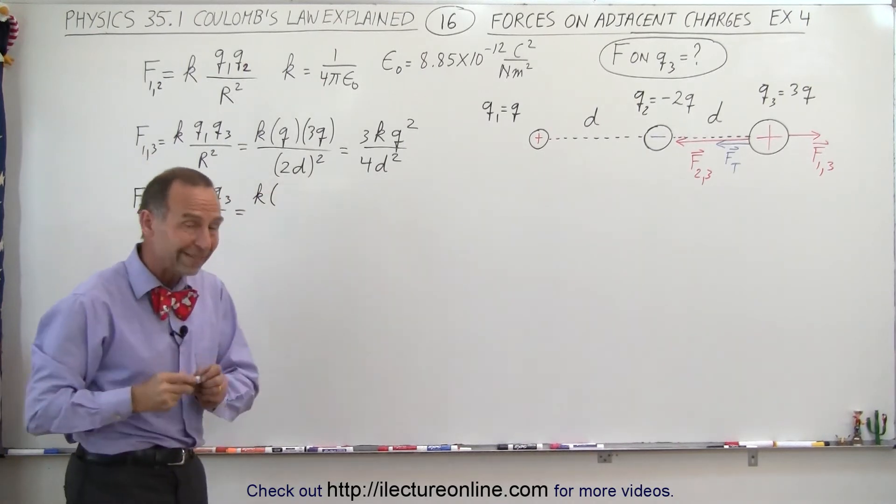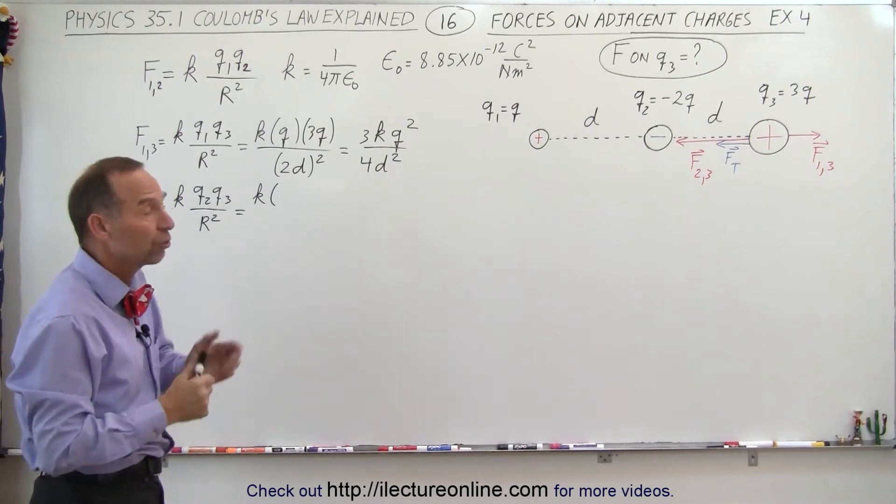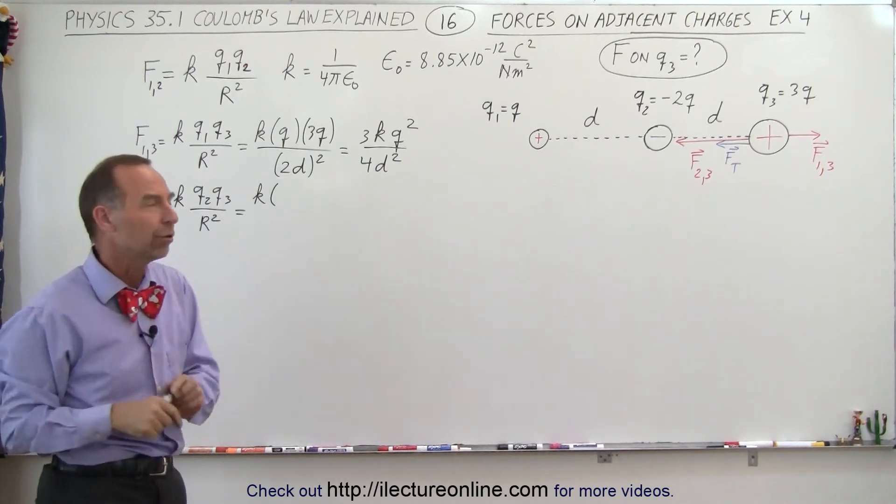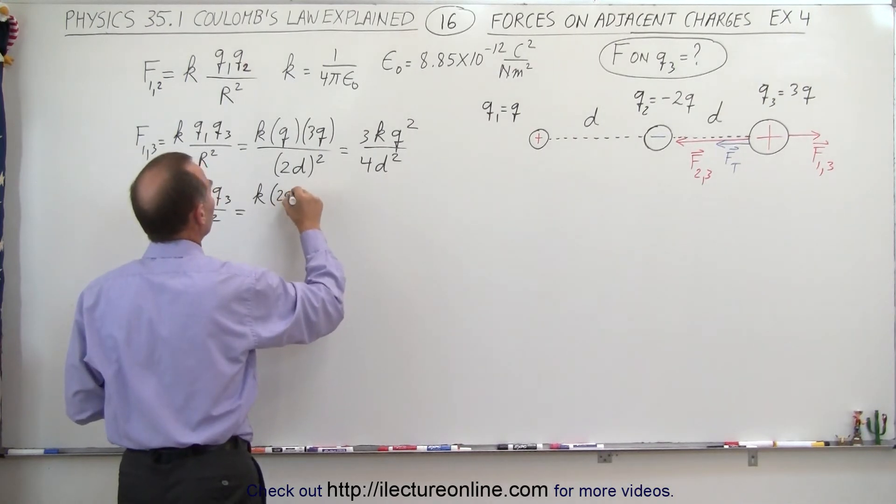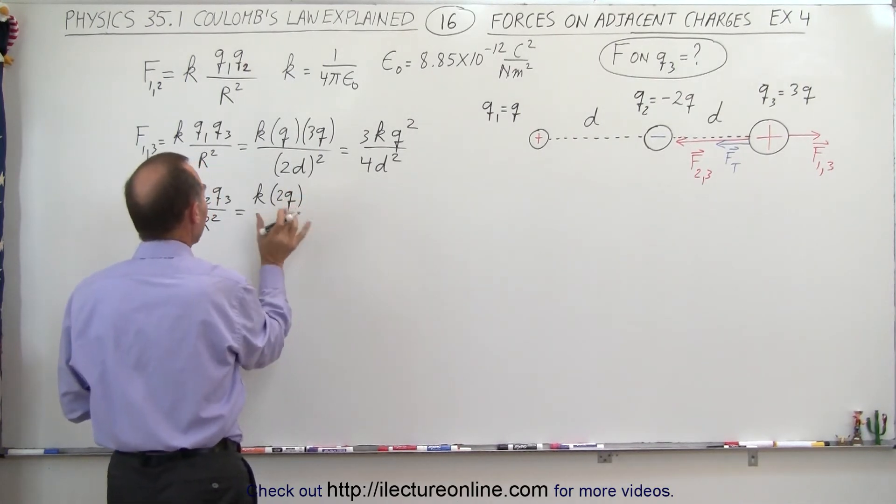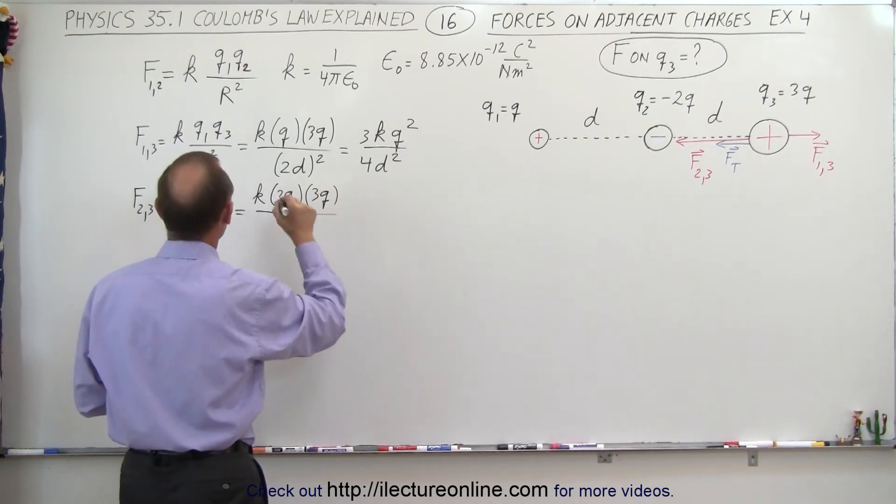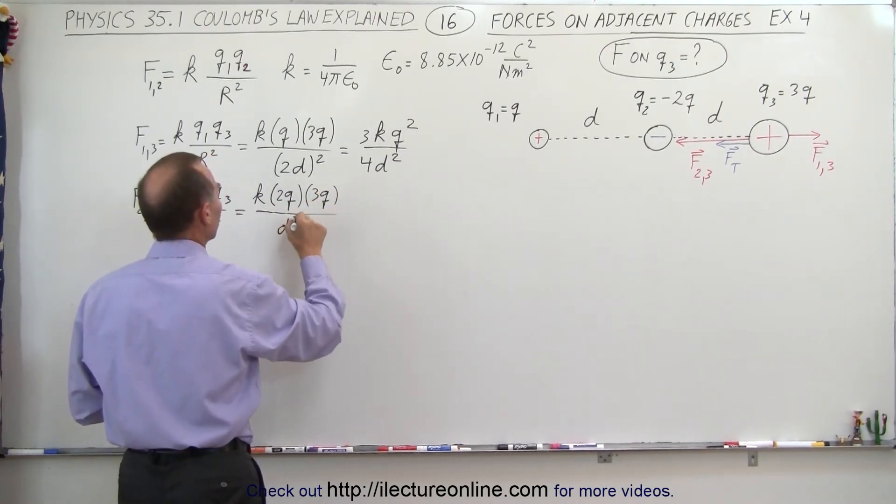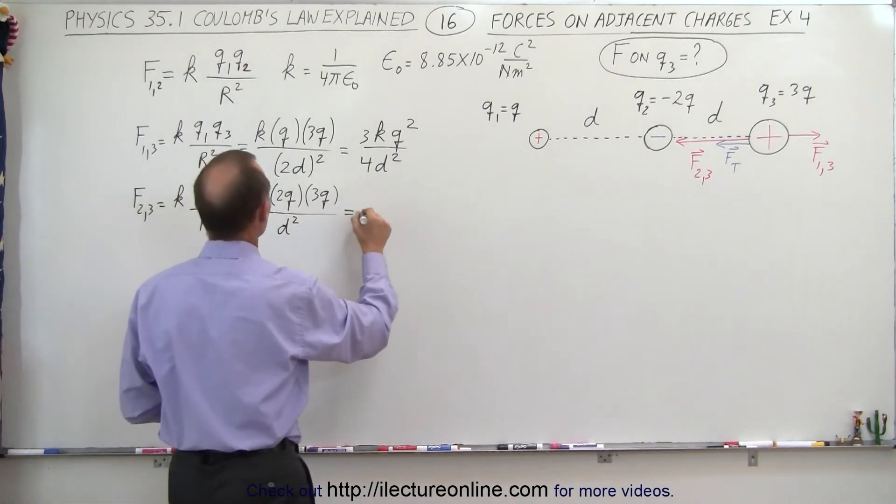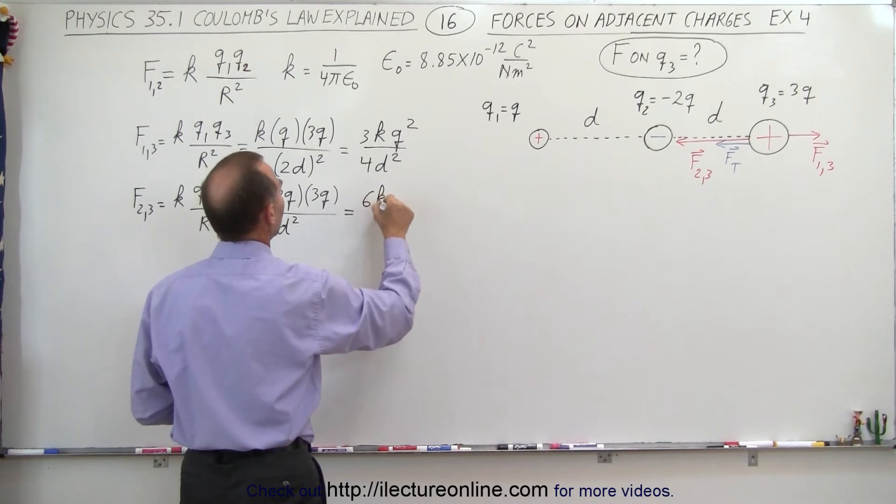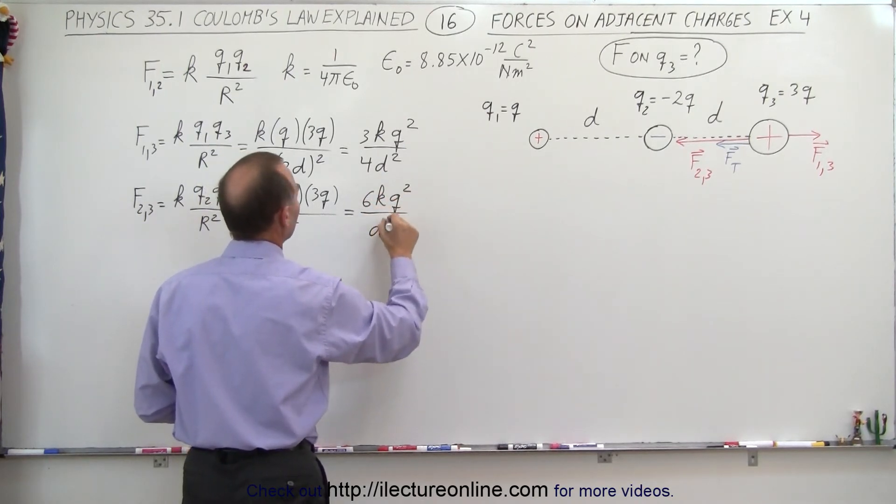So here we have K times Q2. Now even though Q2 is a negative charge, we're not going to put down negative 2Q. We're simply finding the magnitude of the force, and so the negative signs don't matter, so we're going to write 2Q, because we only care about the magnitude, times Q3, which is a positive 3Q, and then we divide that by D², because the distance between those two is simply D. And so this becomes equal to 6KQ² divided by D².